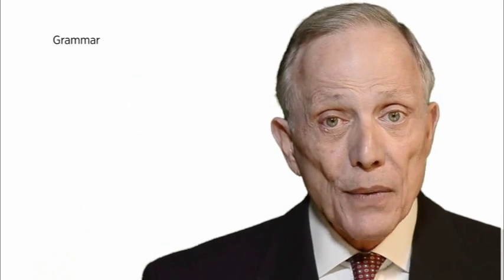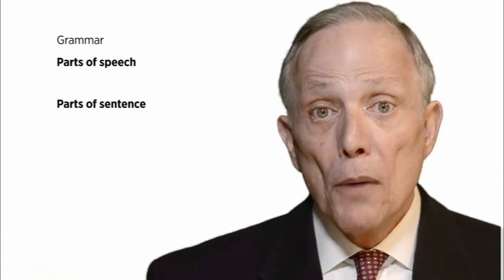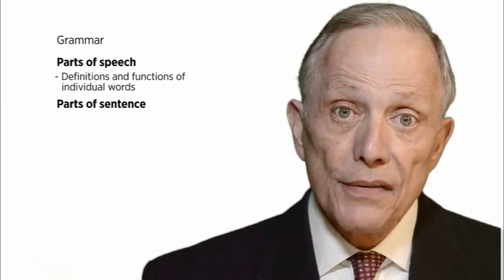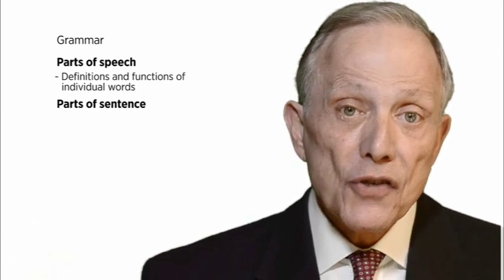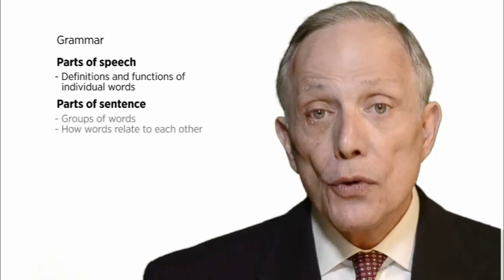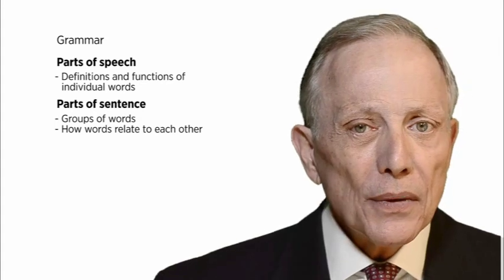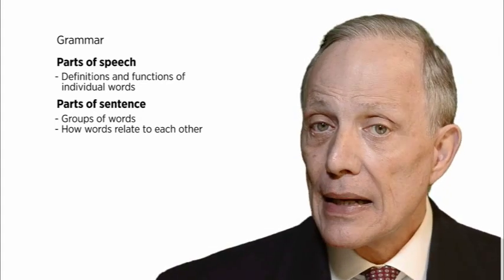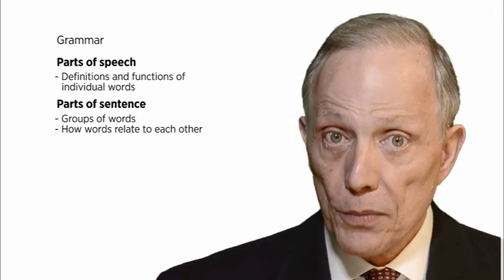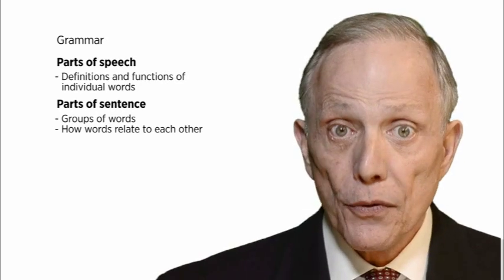Now grammar is made up of two parts: parts of speech and parts of a sentence. Parts of speech are the definitions and functions of individual words — the jobs that words do and their nature. Parts of a sentence deal with groups of words and how words relate to each other. So let's take a look at some examples, and after we do we're going to look at a passage from an MCAT verbal to show you how important these concepts are and how they can quickly improve your performance.